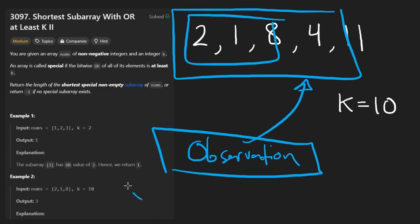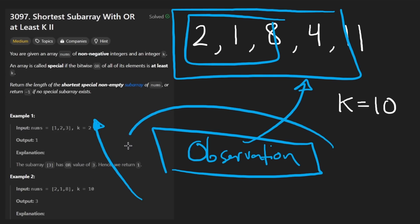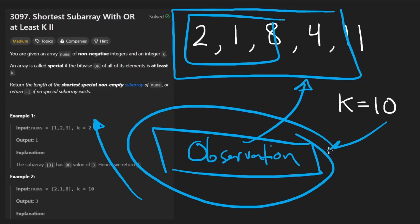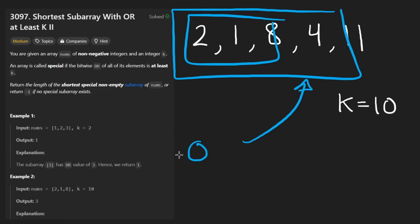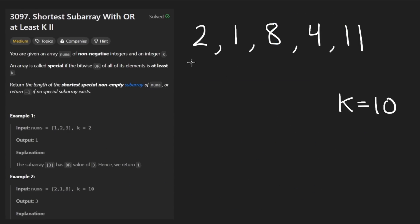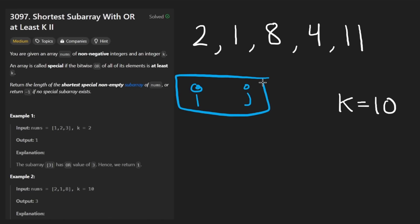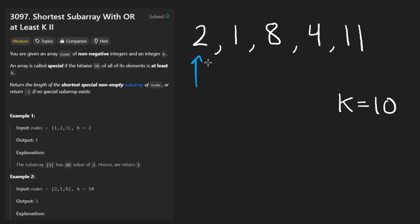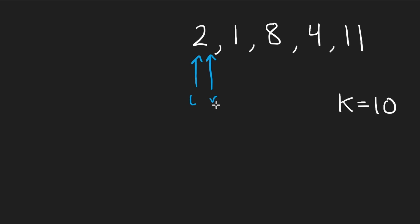Take out pen and paper, take notes, pause the video if you need to — do not skip this step. So now, how does that observation help us? We're going to have those same two pointers, I and J — but instead of nested loops, we'll have them together as a sliding window. The left and right pointer both start here, and we check the OR of this. It's 2, not greater than K, so we shift the right pointer.